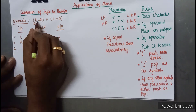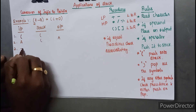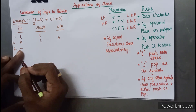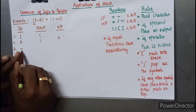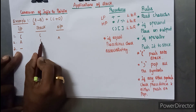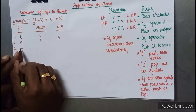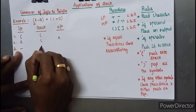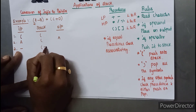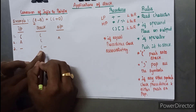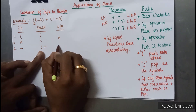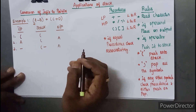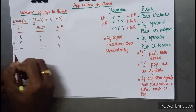The next character is the subtraction operator. We check the precedence: the operator encountered now has lower precedence than the left parenthesis, so this should be pushed onto the stack. The stack now has the left parenthesis at the bottom and the subtraction operator on top, while the output remains 'a'.